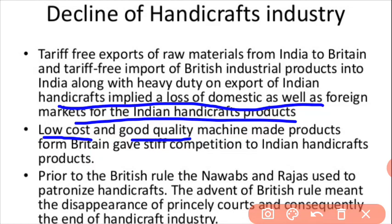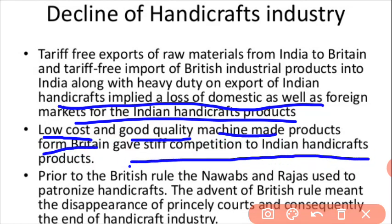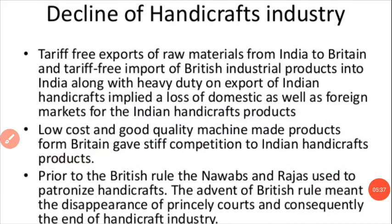Low cost and good quality machine-made products from Britain gave stiff competition to Indian handicraft products. For example, if you are getting a handmade product for 1000 rupees and the same product prepared by machinery is available for 100 rupees, people will simply buy the cheaper one. The same game was played by the British — they used machines to produce goods cheaply and undercut Indian craftsmen.